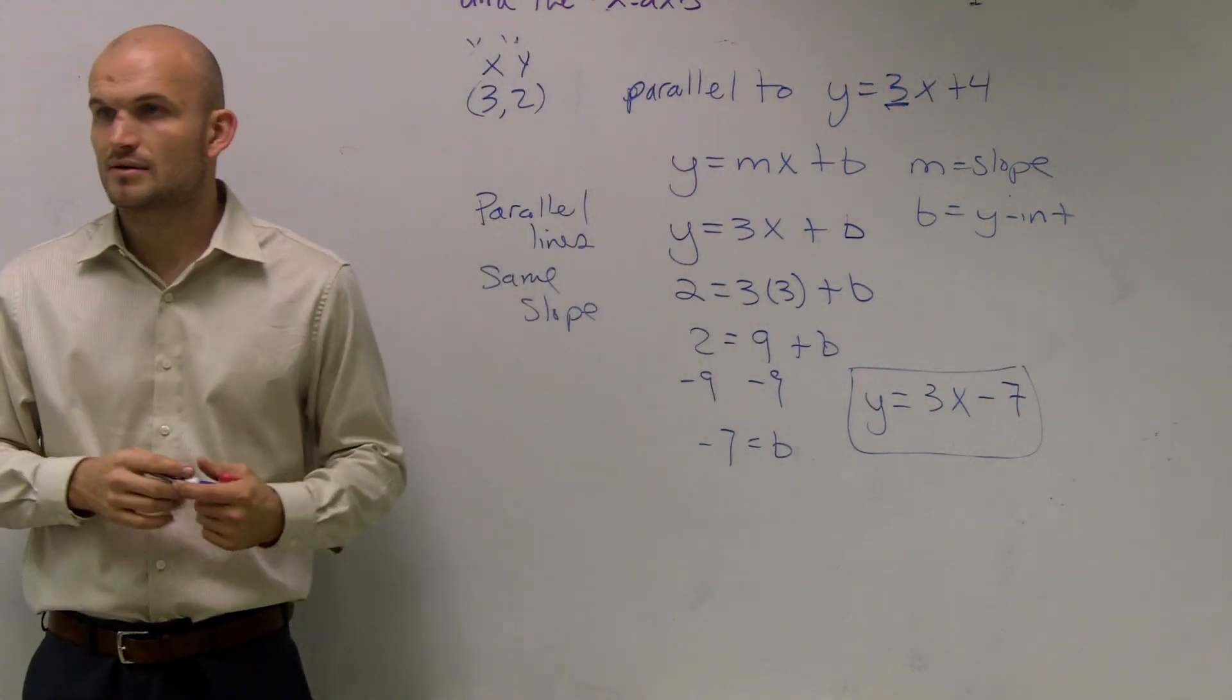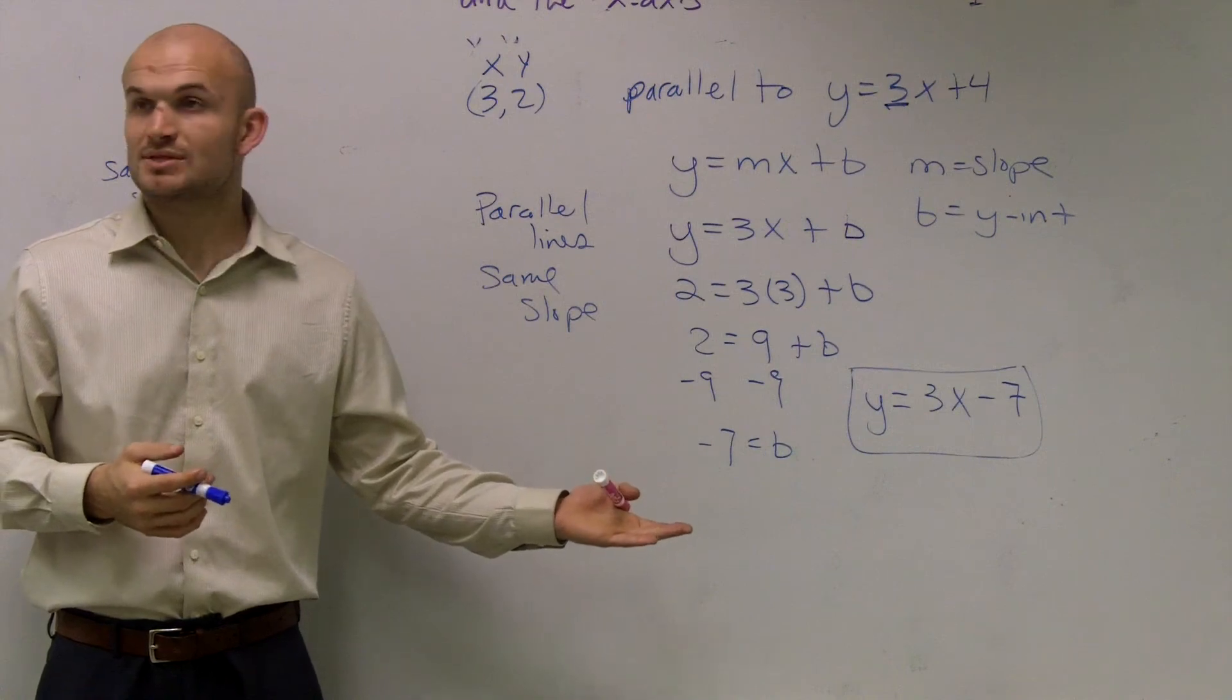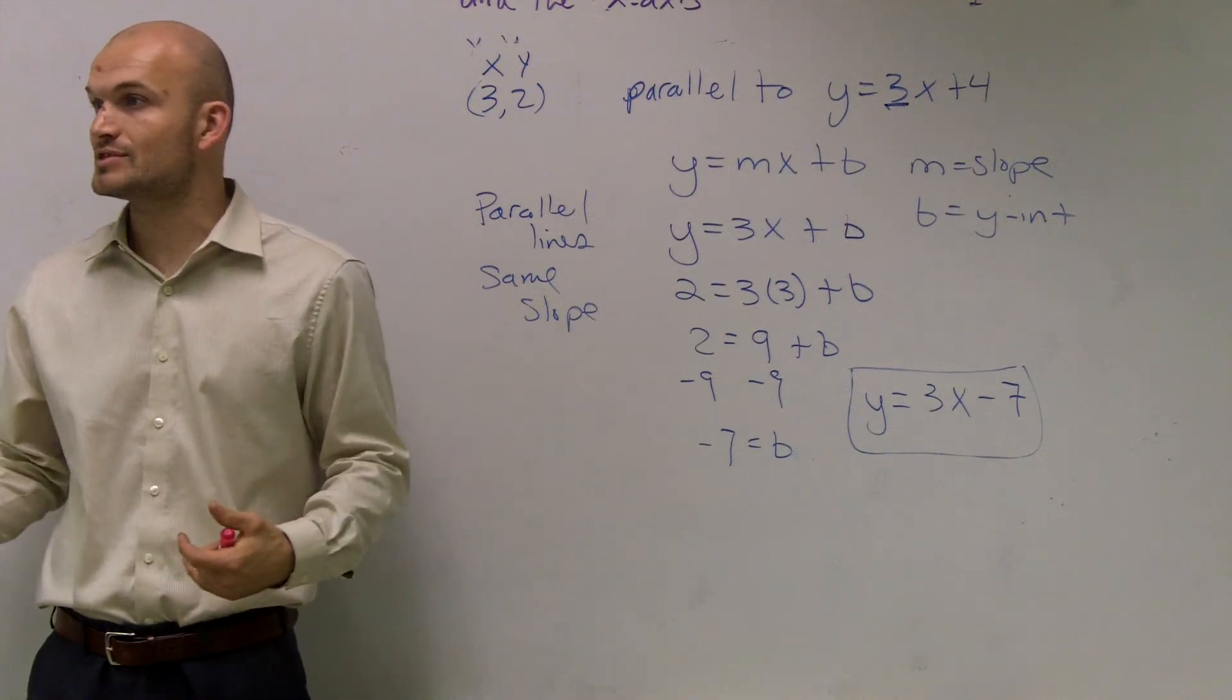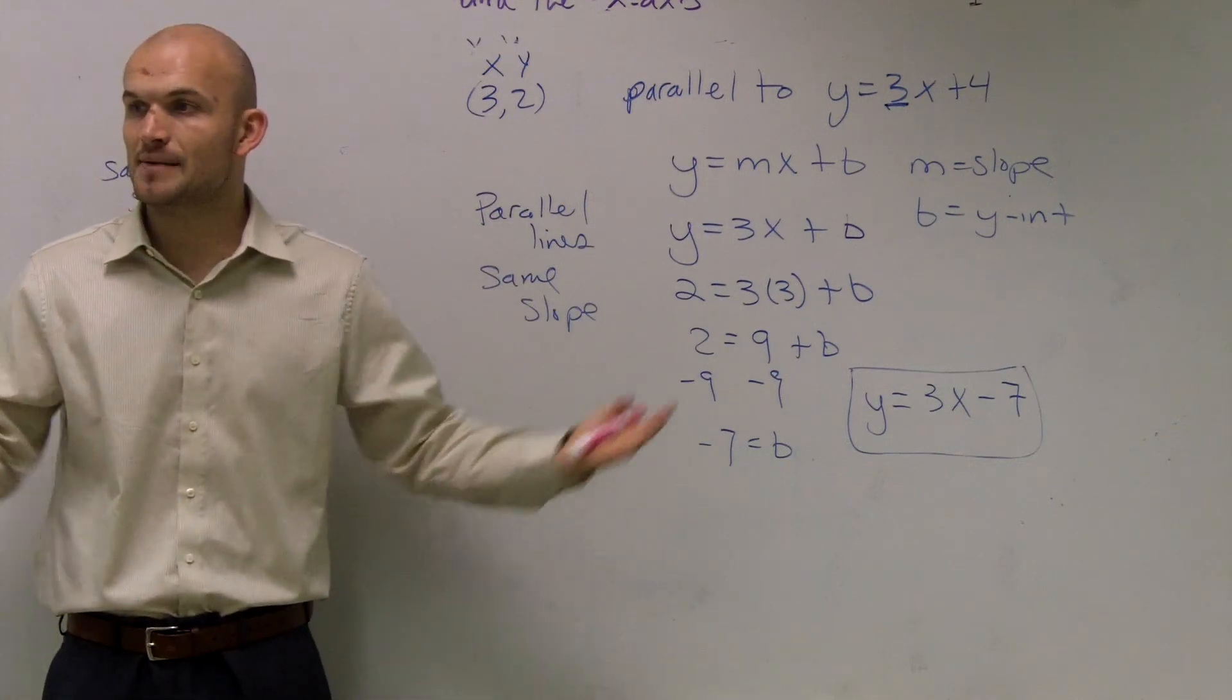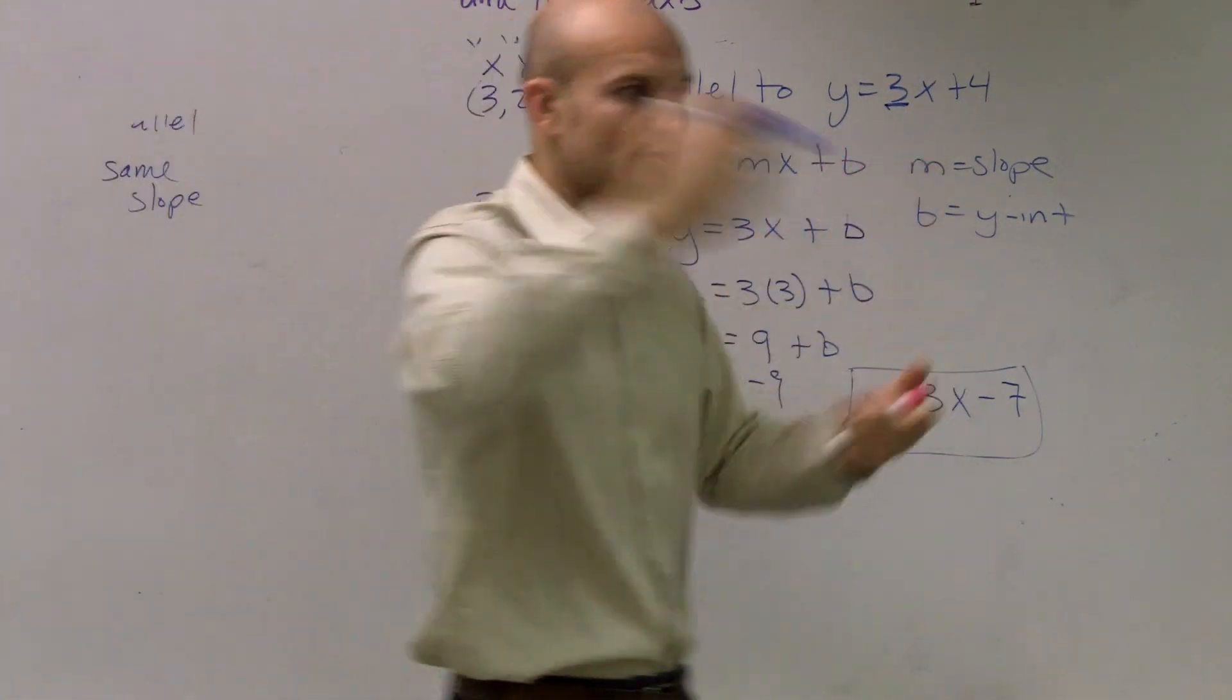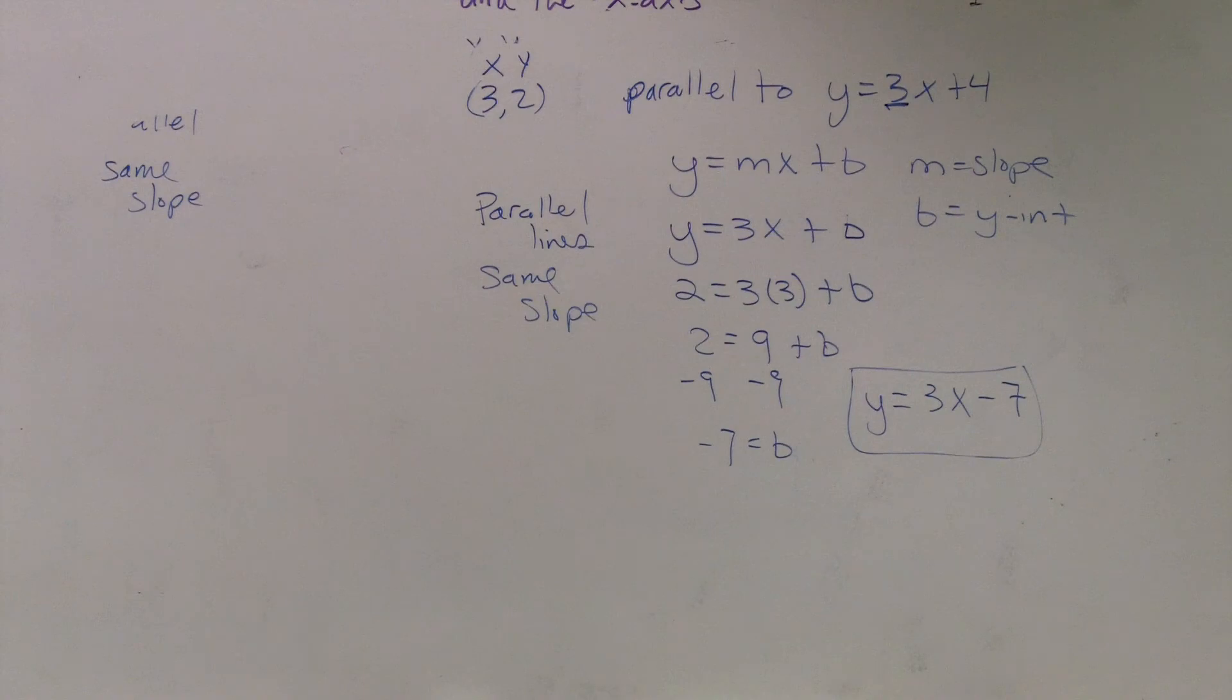Anybody have any questions on that? Parallel lines, exactly the same slope. Perpendicular lines, opposite reciprocal. Make sure you plug your point in, find your new y-intercept, that's it. Then you know the slope and the y-intercept, and it's done.